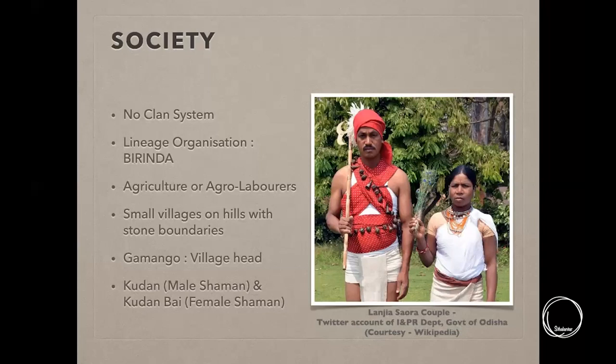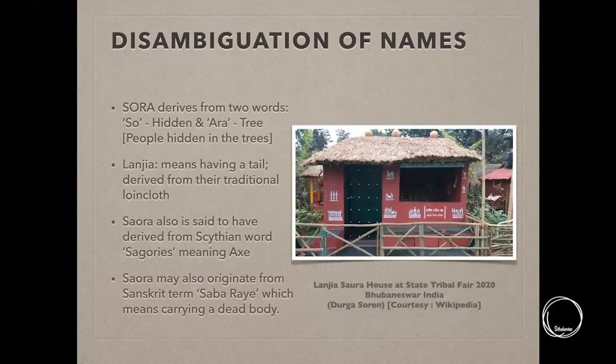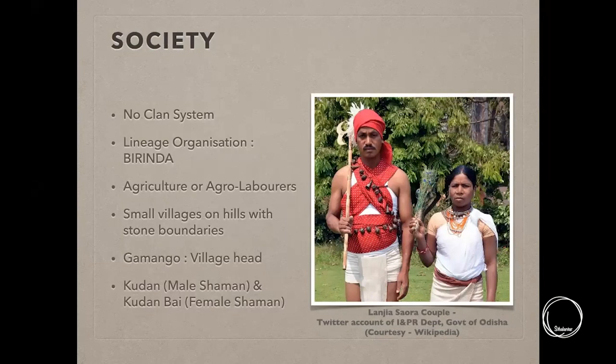The loincloth worn by Saura men is loose in the front and has a longer, tail-like part at the rear — that is how they get the name Lanjia, which basically means 'tail.'